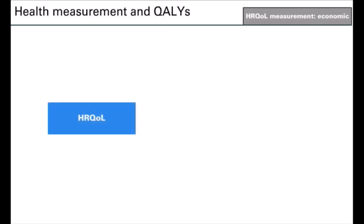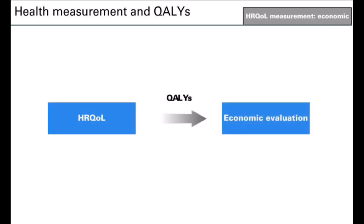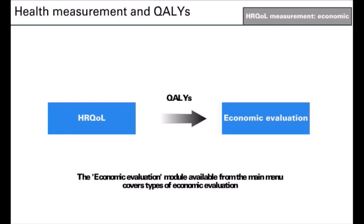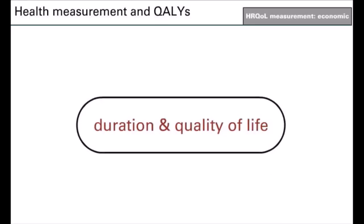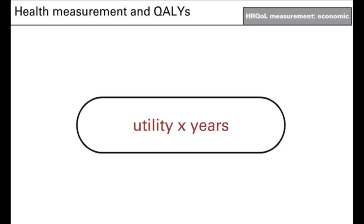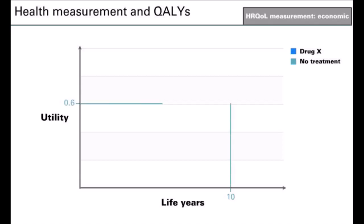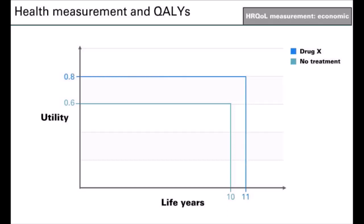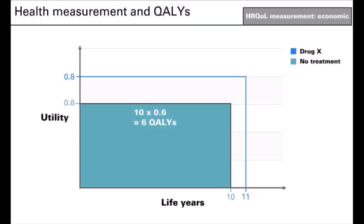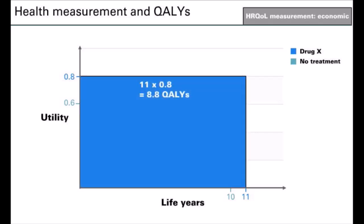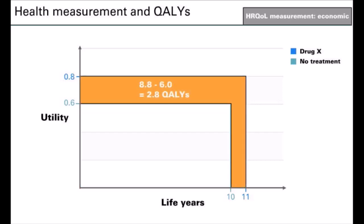Health-related quality of life is most commonly incorporated into economic evaluation through quality-adjusted life years, or QALYs, in cost-utility analysis. QALYs aim to comprehensively capture health outcomes by combining duration and quality of life. They are calculated by multiplying the utility of a health state by the number of years spent in it. For example, a patient lives for 10 years with a utility of 0.6 without treatment, giving 6 QALYs, or for 11 years with a utility of 0.8 when treated with drug X, giving 8.8 QALYs — an increase of 2.8 QALYs.